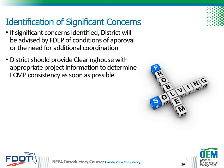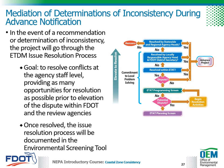The requested project information should be provided as soon as the information becomes available. All issues or concerns identified during the AN review should be addressed. If a recommendation or determination of inconsistency with the Florida Coastal Management Program is made by the clearinghouse and its consistency reviewing agencies during the advance notification, the project will go through the ETDM issue resolution process, which is discussed in detail in Chapter 2 of the ETDM Manual. The goal of the ETDM issue resolution process is to resolve conflicts at the agency staff level, providing as many opportunities for resolution as possible prior to elevation of the dispute within FDOT and the review agencies. Once the issue has been resolved, the issue resolution process will be documented in the Environmental Screening Tool. The Environmental Screening Tool Handbook provides additional guidance on tracking and documenting the issue resolution process.